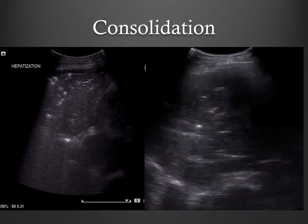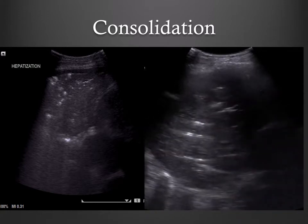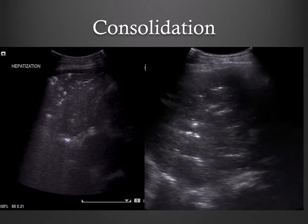Consolidation on ultrasound will appear similar in density to the liver. Consolidation can occur with an array of conditions: infection, infarct, malignancy, trauma, or complete atelectasis. While certain sonographic clues can help differentiate etiology, these often require more advanced technique.